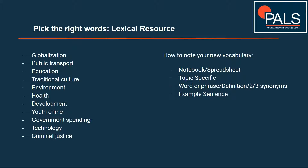This all ties into the lexical resource part of the band descriptors. Lexical resource is worth 25% of your total score. If you are not sure what lexical resource means, it basically means your vocab range and accuracy. Your vocab range just means do you use lots of different types of words, lots of higher level words? Do you use things like collocations? Do you use things like lexical chunks? Do you have repetition with your vocab? The accuracy part means do you use the right words in the right contexts? Does it all make sense, and does it feel natural the way you use your vocabulary?